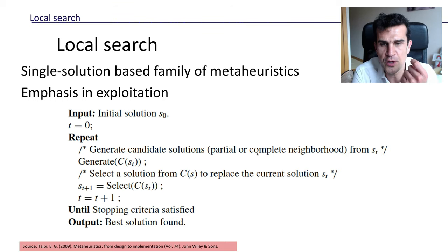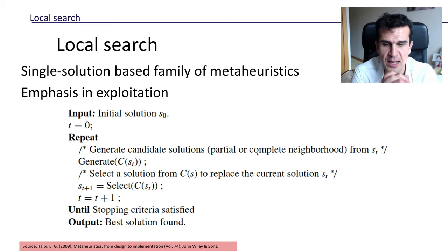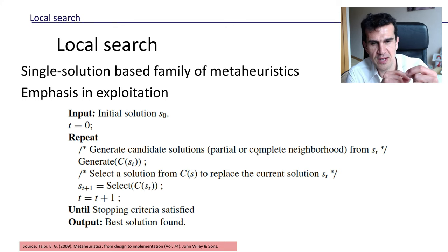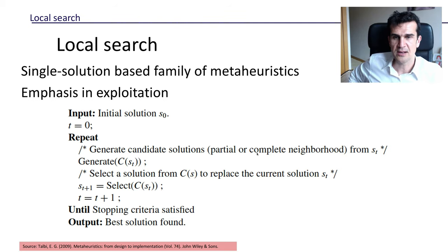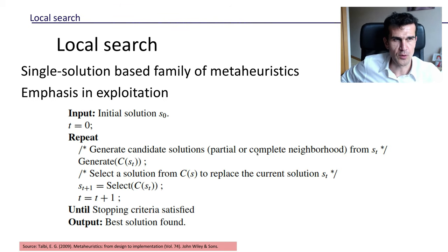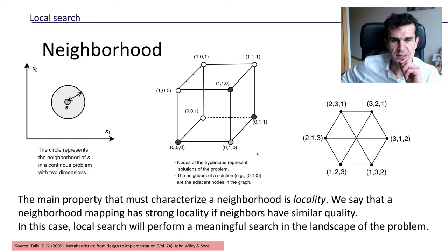We define a neighborhood and look only within this local neighborhood. Within this neighborhood we choose one of the neighbors according to some criterion, move to that chosen neighbor, look at the neighborhood of this new neighbor, and repeat this process iteratively. That is what is common to all local search algorithms.